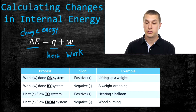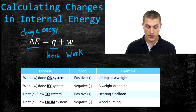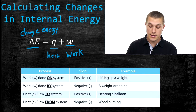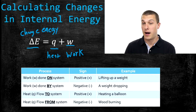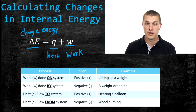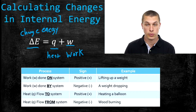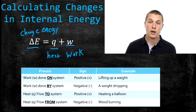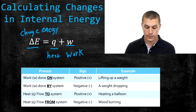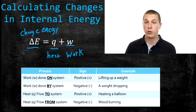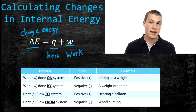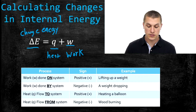You can also have energy transfers by heat, abbreviated as Q. If you put heat into the system, we call that a positive change in internal energy because you're increasing how much energy that system has. An example would be heating a balloon. On the other hand, you could have heat flow from a system — an example being wood burning. If wood burns, the energy in that system is decreasing, and so we call that a negative change.